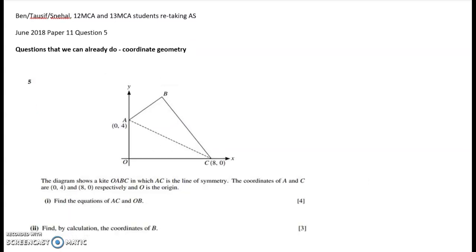So this is completely different from the trig one, this is coordinate geometry. We've got a very nice diagram that shows us a kite, and the kite has got these points. So the first point is O, and then A, B, C, and AC is the line of symmetry. The coordinates of A and C are 0, 4, and 8, 0 respectively.